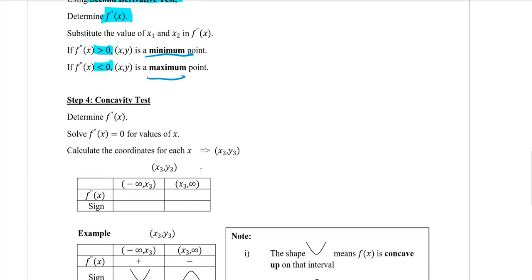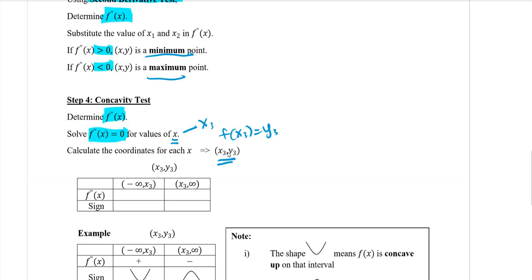The fourth step is the concavity test — you want to test whether the graph is concave up or concave down. For the concavity test, we use f''(x). You need to determine f''(x) and then solve for f''(x) equals 0 to find the values of x. Let's say you get another value x3 — calculate the coordinates by finding f(x3) to get y3, and write those values in terms of coordinates. This makes it easier to plot the graph.